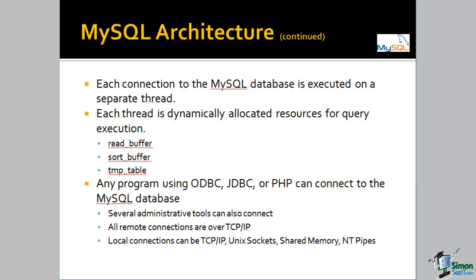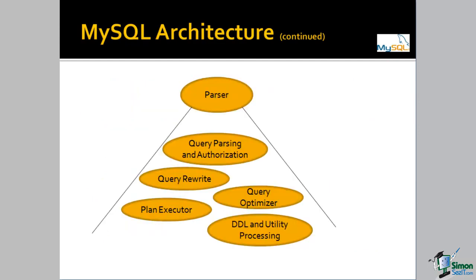There are several administrative tools, either open source or fee-based, that can connect either locally or remotely to any MySQL database. Remote connections occur over TCP/IP, while local connections can be accomplished over TCP/IP, Unix sockets, or shared memory on Linux, and named pipes (NT pipes) on Windows. Once we've gotten our connection and passed our query into the MySQL environment, we have a thread with dynamically allocated resources for execution of that query. The query is then passed to the parser.